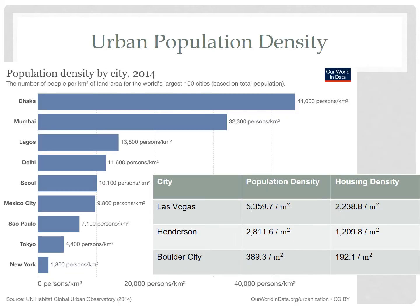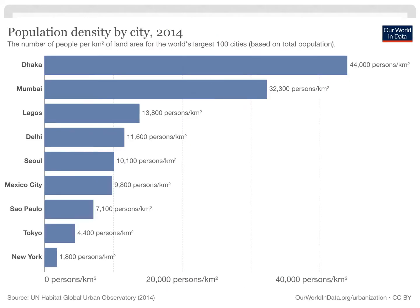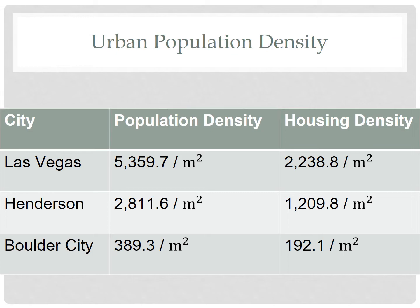Now, let's move away from theories and models and provide some real-life examples. New York City is easily the most densely populated city in the United States, with an average of 27,000 people per square mile. By comparison, Los Angeles has an average density of about 7,500 people per square mile, and Las Vegas has an average of over 5,000 people per square mile. But as you can see, as distance from the CBD of Las Vegas increases, population density decreases to Henderson and then further out to Boulder City, thus supporting our theories.